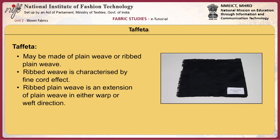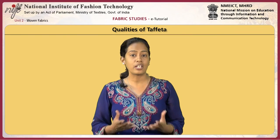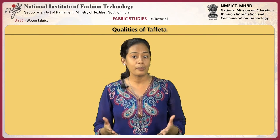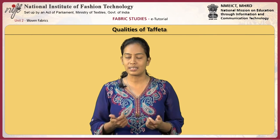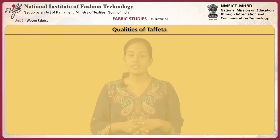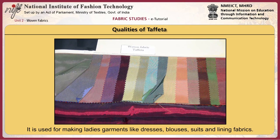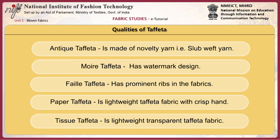Taffeta fabric may be made of plain weave or ribbed plain weave. Ribbed weave is characterized by a fine rib effect. Ribbed plain weave is an extension of plain weave in either the warp or weft direction. Taffeta is made of filament yarns which give lustre to the fabric, and usually has almost double the number of warp yarns as weft yarns. The fabric is compact and crisp, and on handling has a slippery rustle. Varieties of taffeta include different colours in warp and weft giving a shimmering effect. Taffeta is used for ladies' garments like dresses, blouses, suits and lining fabrics. Types include antique taffeta, moiré taffeta, faille taffeta, paper taffeta and tissue taffeta.